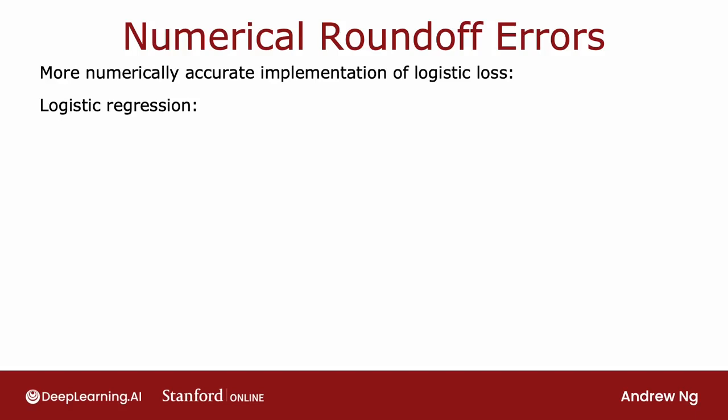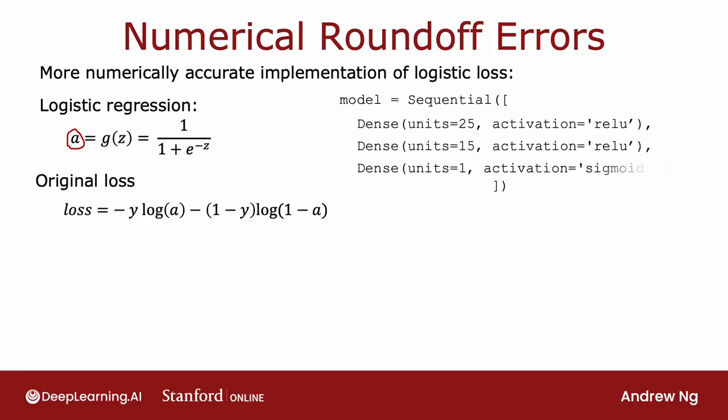Recall that for logistic regression, if you want to compute the loss function for a given example, you would first compute this output activation a, which is g of z, or 1 over 1 plus e to negative z. Then you compute the loss using this expression over here. In fact, this is what the code would look like for a logistic output layer with this binary cross entropy loss. For logistic regression, this works okay, and usually the numerical round-off errors aren't that bad.